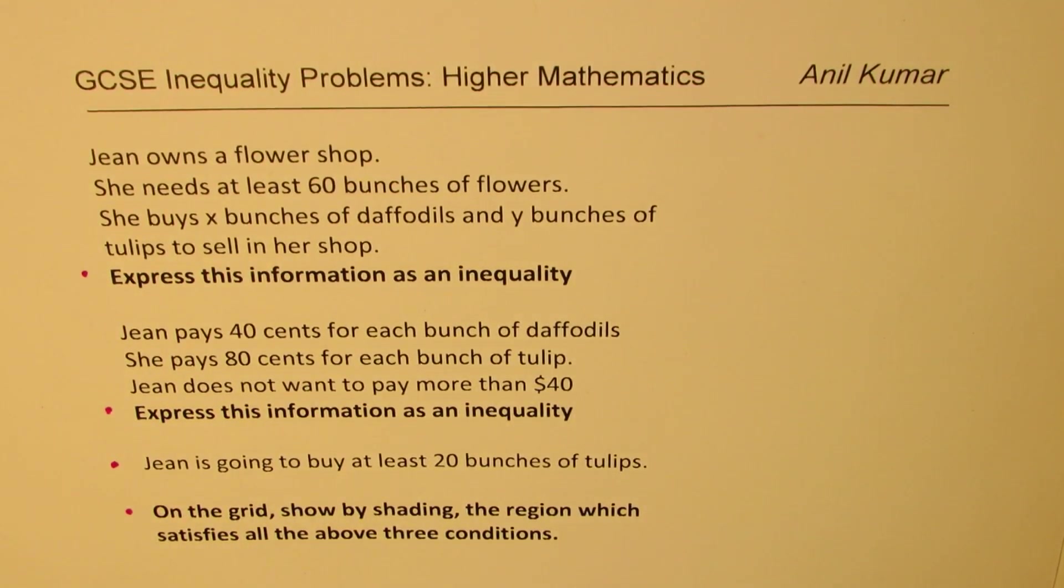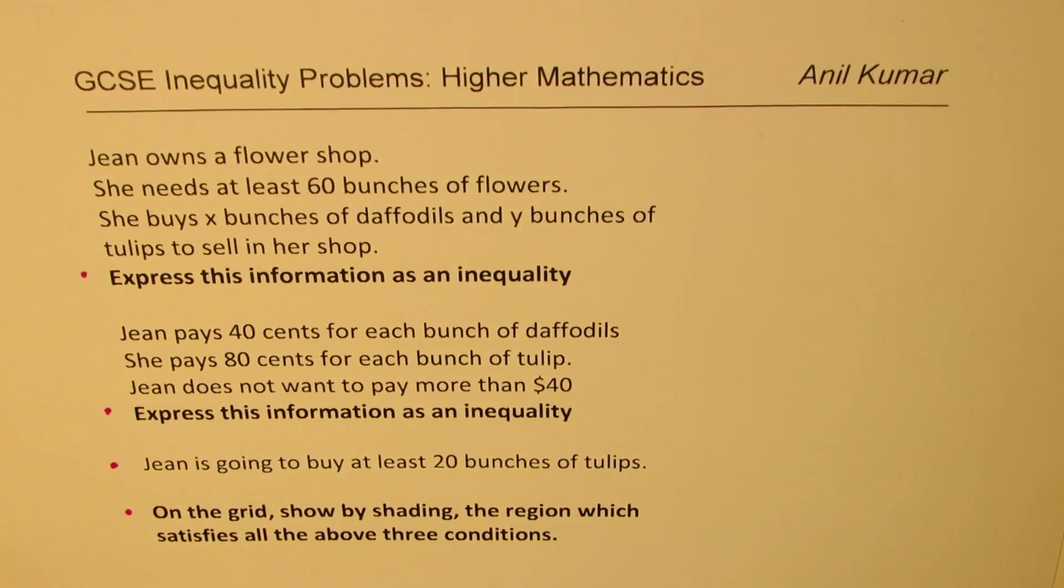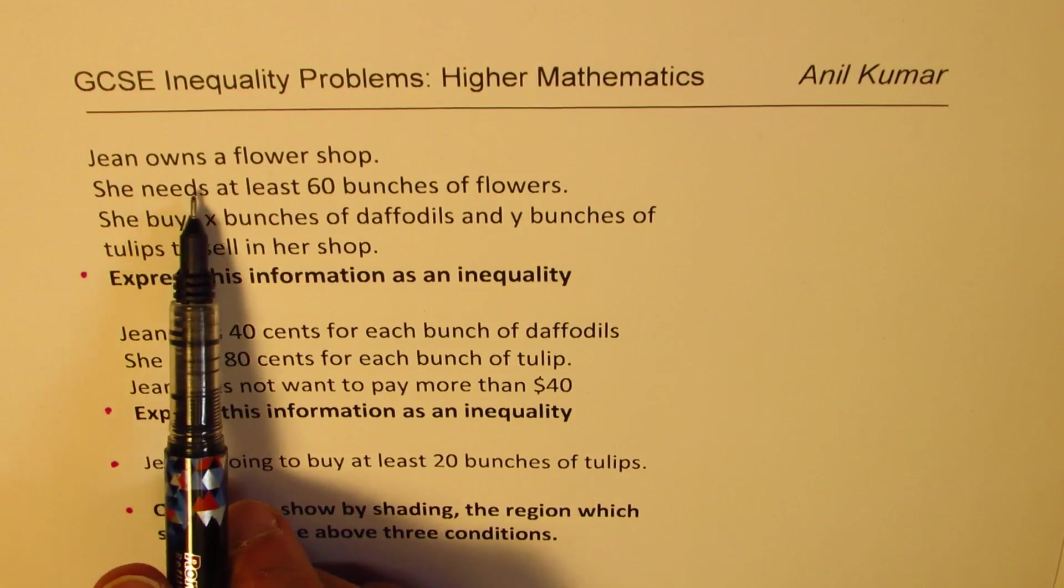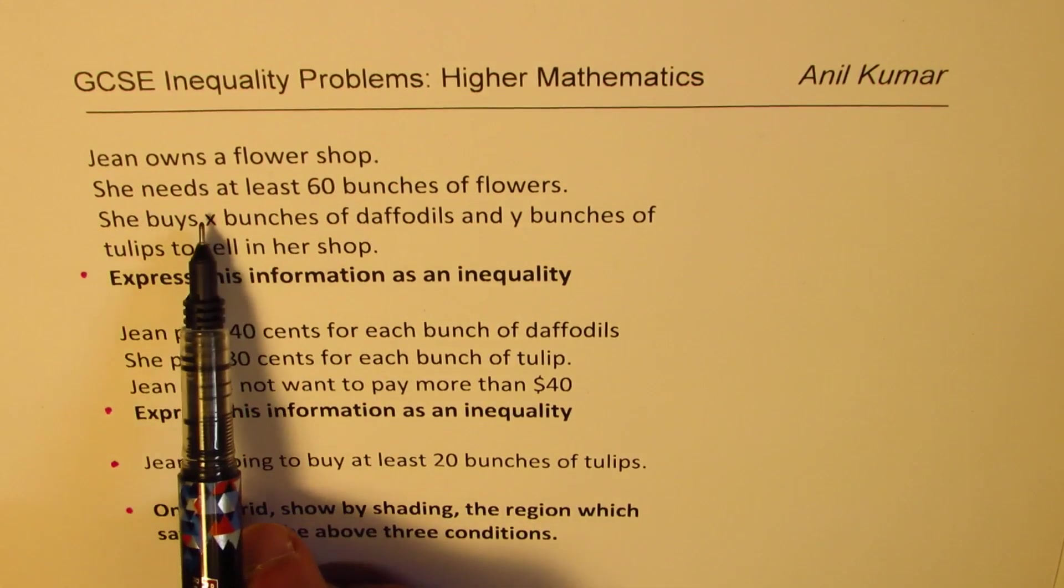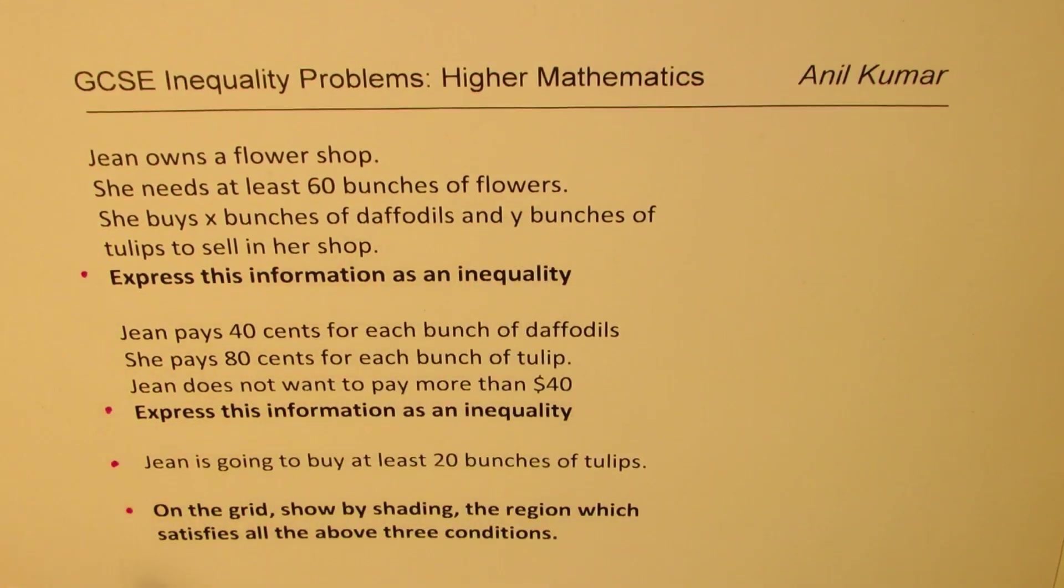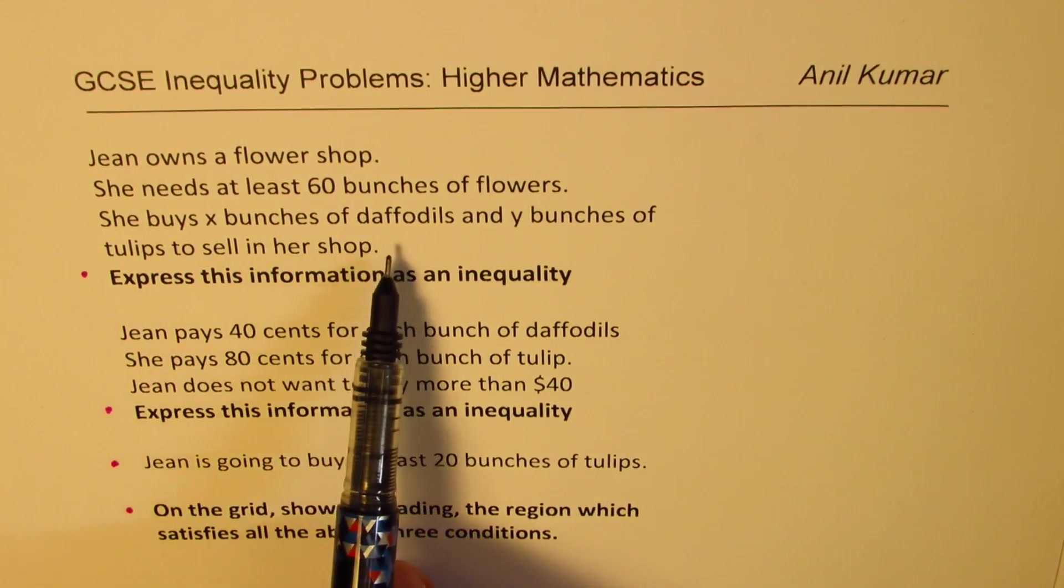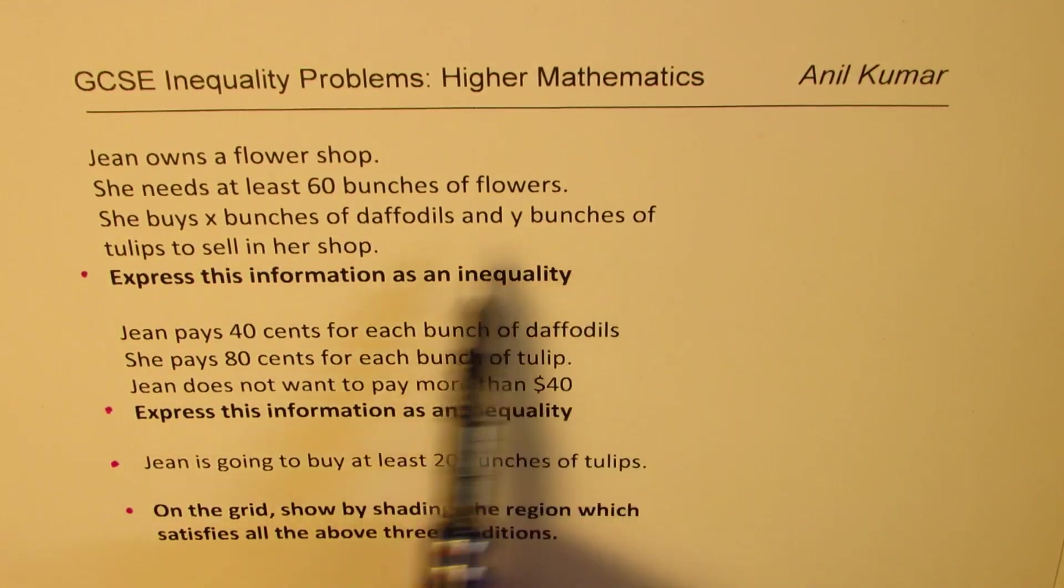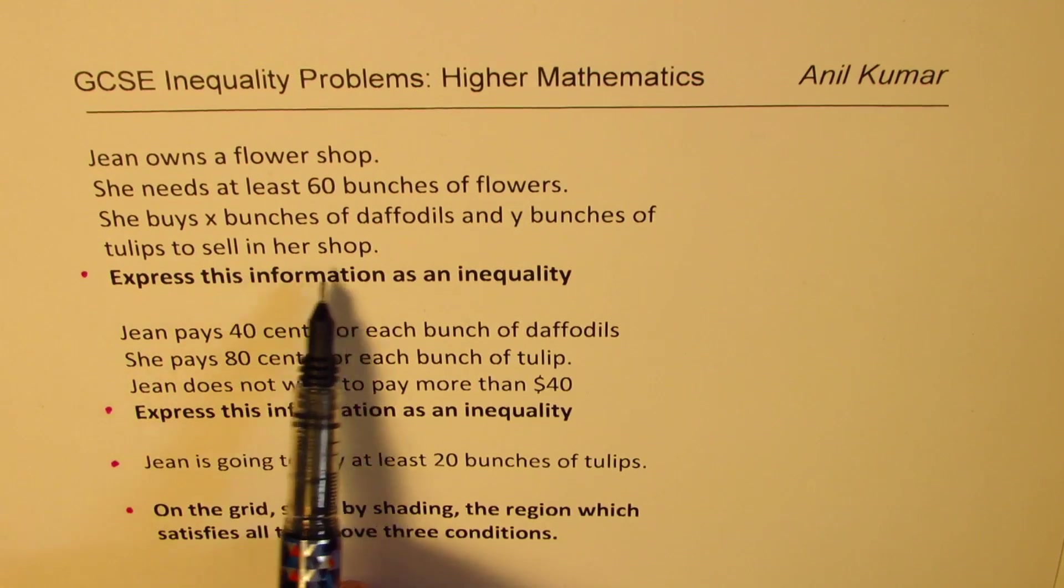It comes from GCSE Inequality Problems Higher Mathematics. The question here is, Jean owns a flower shop. She needs at least 60 bunches of flowers. She buys X bunches of daffodils and Y bunches of tulips to sell in her shop.